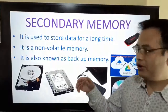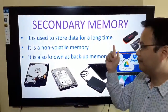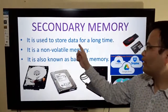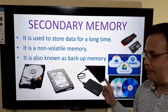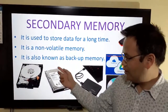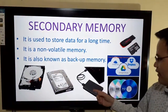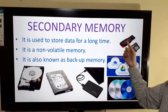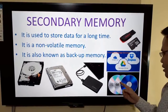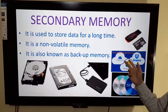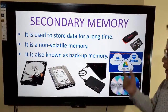Now let's look at the other type of computer memory — secondary memory. Secondary memory is used to store data for a long time. It is non-volatile memory and is also known as backup memory. Examples include hard disk, external hard disk, pen drive, memory card, compact disc (CD), DVD, Blu-ray disc, and cloud storage. We will see all these types of secondary memory in detail.